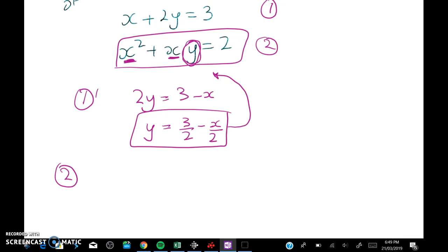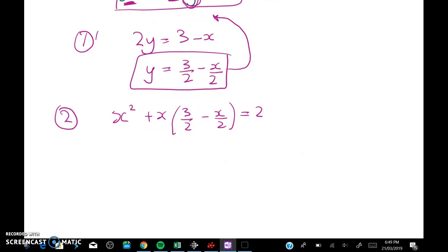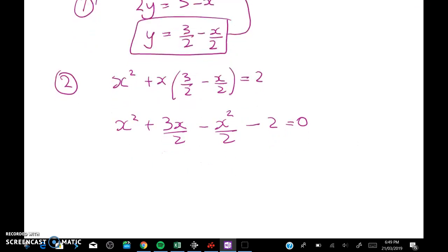I'm going to take this and I'm going to substitute it back into equation 2. So equation 2 is going to be this x squared plus x times (3 over 2 minus x over 2) is equal to 2. And we're getting a little quadratic here. Expanding that out gives me x squared plus 3x over 2 minus x squared over 2 minus 2 equals 0. I'm getting it all to one side to get ready to solve the quadratic.